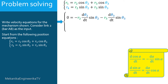Moving to the second equation: R4 is changing with time, thus its derivative is d R4/dt. The time derivative of R2 sine theta 2 is equal to R2 times d theta 2/dt times cosine theta 2. And the time derivative of R3 sine theta 3 is equal to R3 times d theta 3/dt times cosine theta 3.